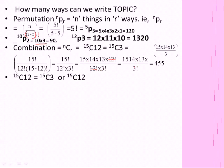Factorial 3 means 3 into 2 into 1. So factorial 3 means 3 into 2 into 1, which gives 6. Then 5 into 12. This is 15C12 is equal to 15C3. We will write about 15C12.